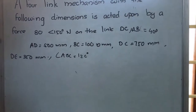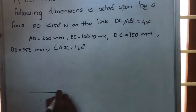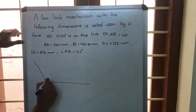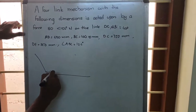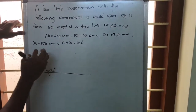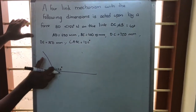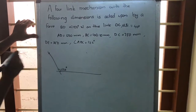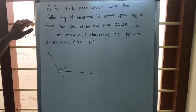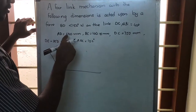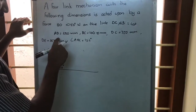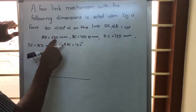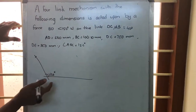Let us draw a horizontal line. Angle ABC is given as 120 degrees. AB is given as 400mm, so cut 400mm here. AB is marked after that.